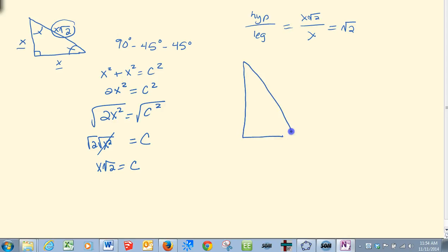Same is true for the half equilateral, where I have a 90, a 30, and a 60. We know that one leg will always be half of the hypotenuse.